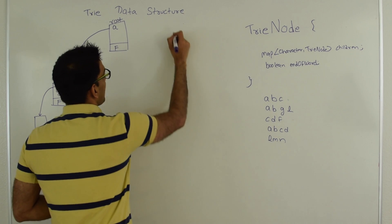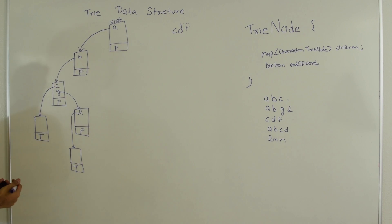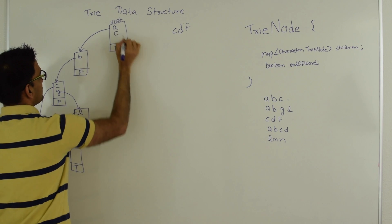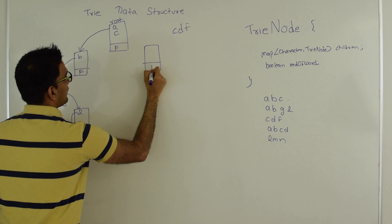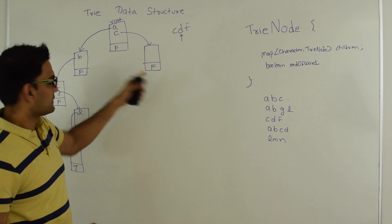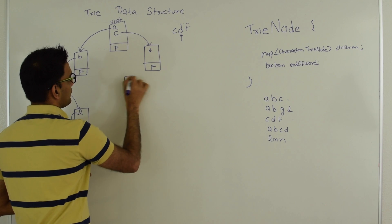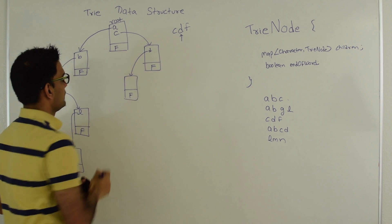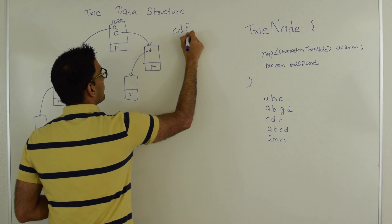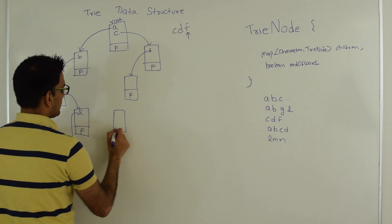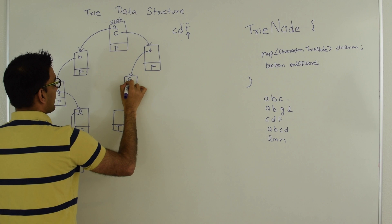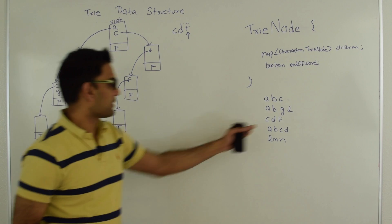Next let's try to insert CDF. We start at root — root does not have C, so we create a new Trie node with end-of-word false. We jump there, our index is now at D. D does not exist, so we create a new Trie node with end-of-word false, put D in the map. Then we move to F — F does not exist, so we create a new Trie node. Its value is TRUE because F is the last character of this word. Finally we are done inserting CDF.